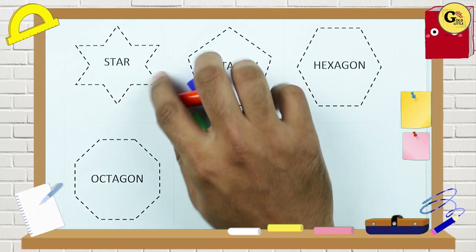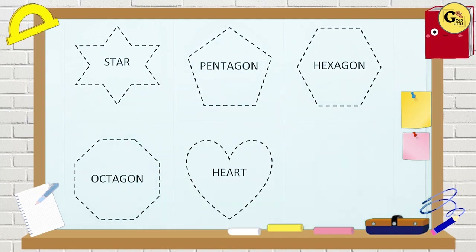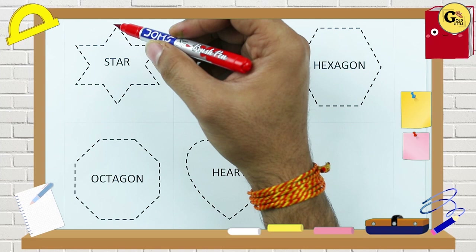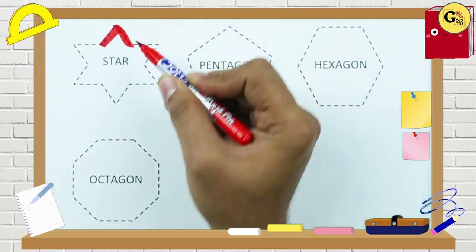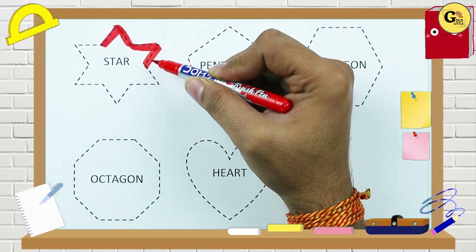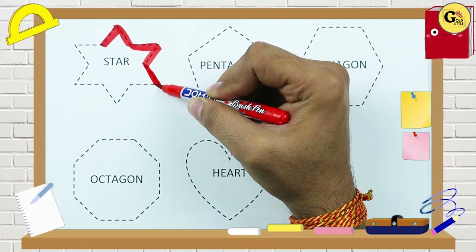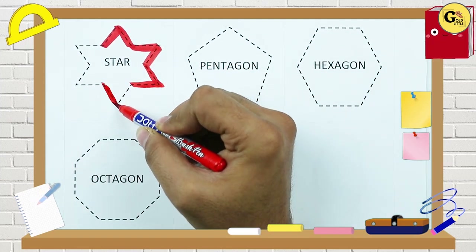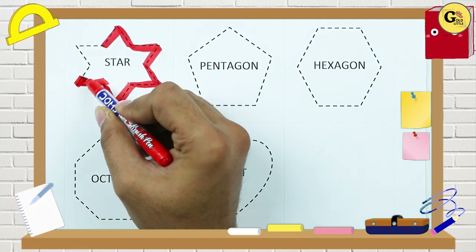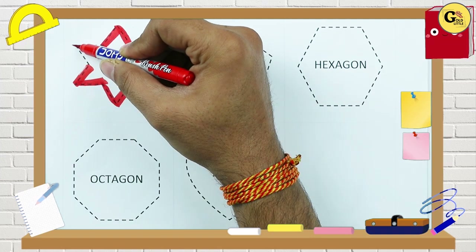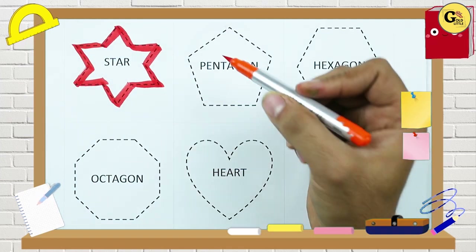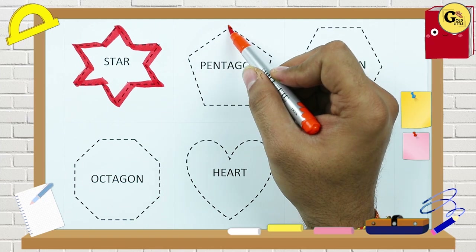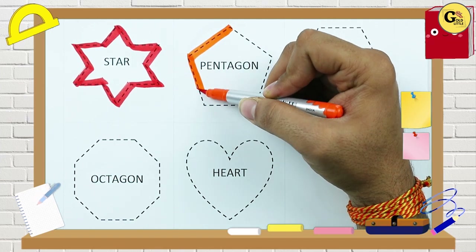Green color. Let's start making a star. Red color star. Pentagon — one line.